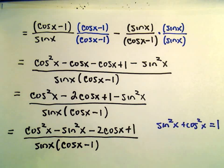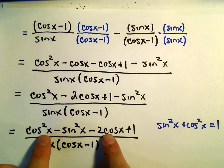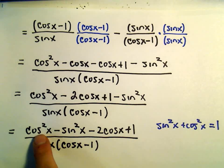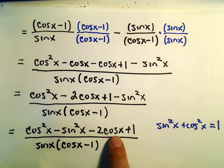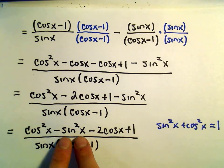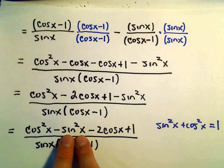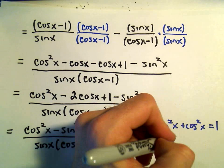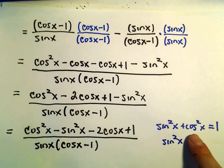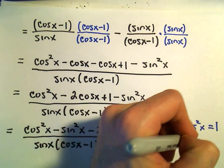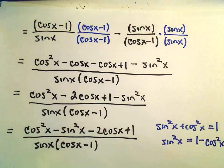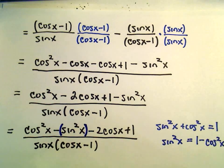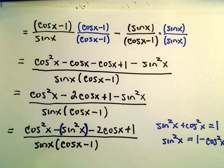The numerator already involves mainly cosine x's — cosine squared, a cosine, and a number. There's a majority of cosines, so I'm going to get rid of the negative sine squared by solving the identity for sine squared: sine squared x equals 1 minus cosine squared x. I'm going to replace sine squared x with 1 minus cosine squared x, hoping things will start cleaning up.